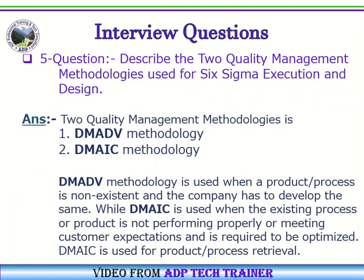Question Number 5: Describe the two quality management methodologies used for Six Sigma execution and design. Answer: The two quality management methodologies are: 1. DMADV methodology. 2. DMAIC methodology.